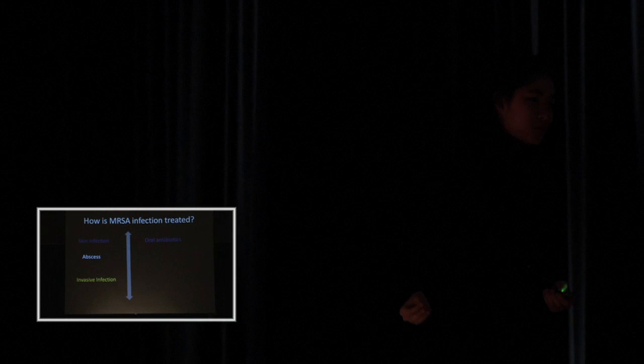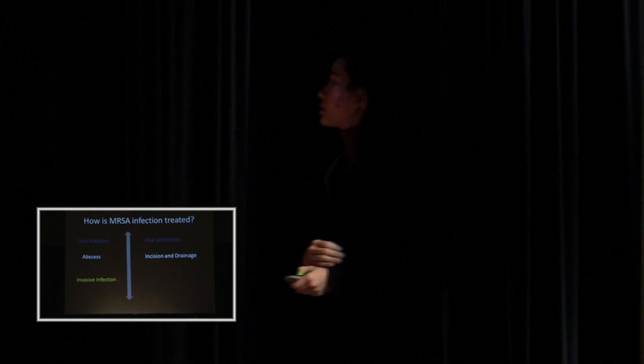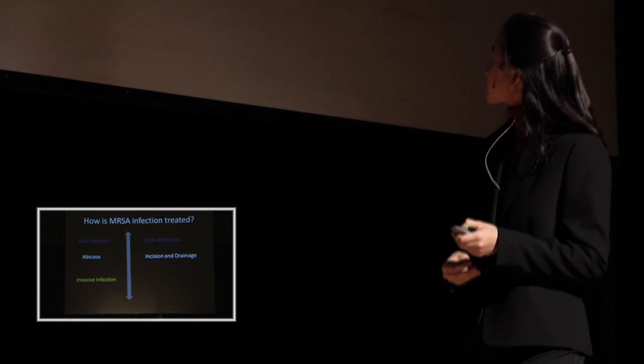The treatment for MRSA differs depending on what type of infection you have. So if you have a skin infection, for example, you'll receive specific MRSA-targeted oral antibiotics, which are called trimethoprim sulfamethaxazole, which is certainly another mouthful. If you have a more severe abscess, which again is the pus-filled infection, you'll get a procedure called incision and drainage. And that's essentially where the doctor cuts open your skin, and he removes the bacteria and the pus.